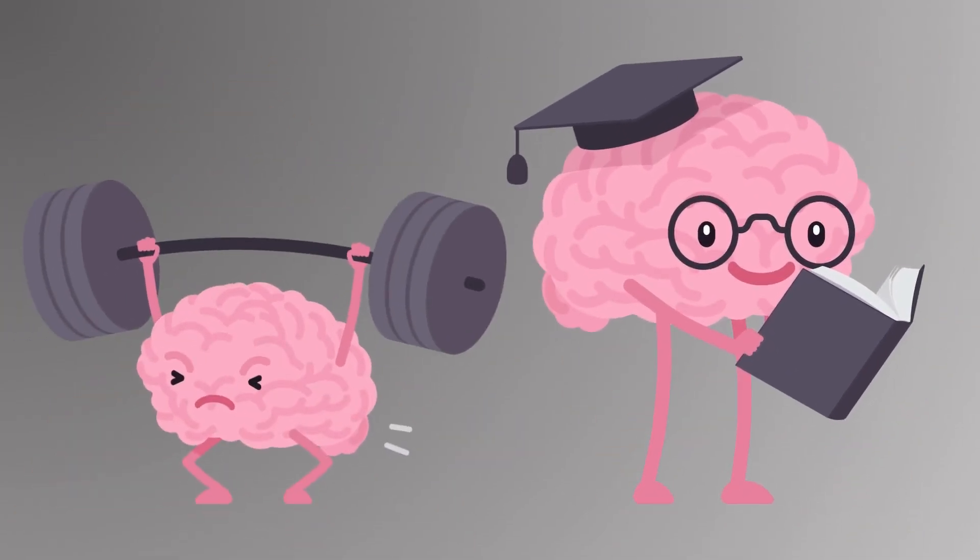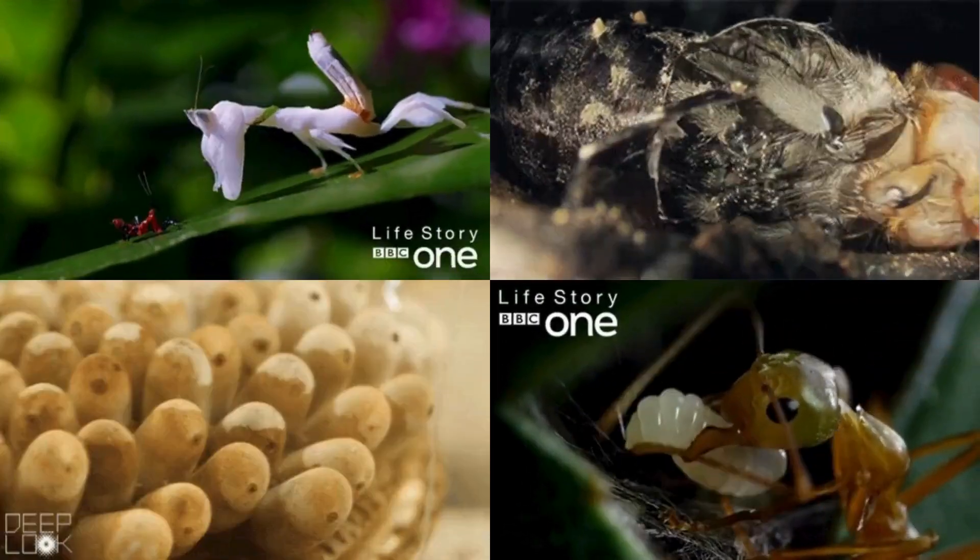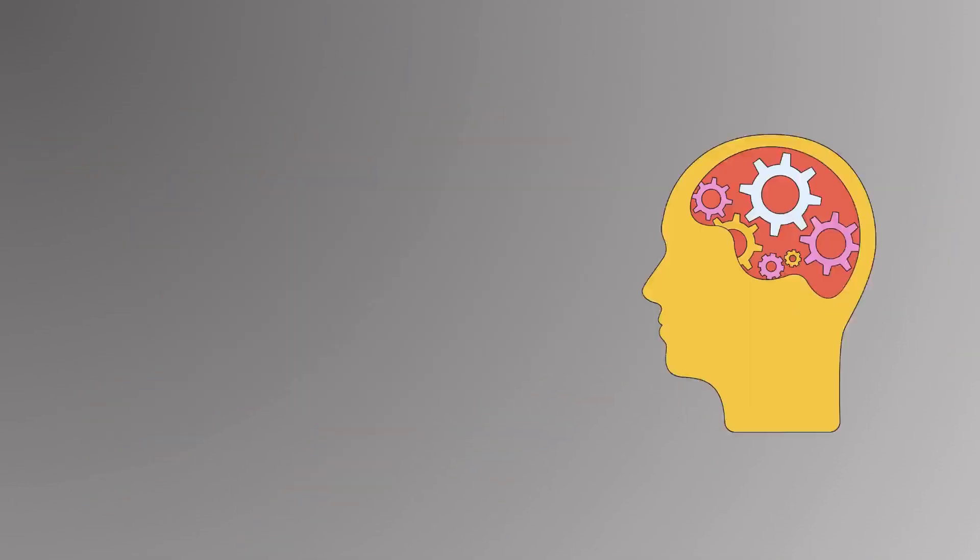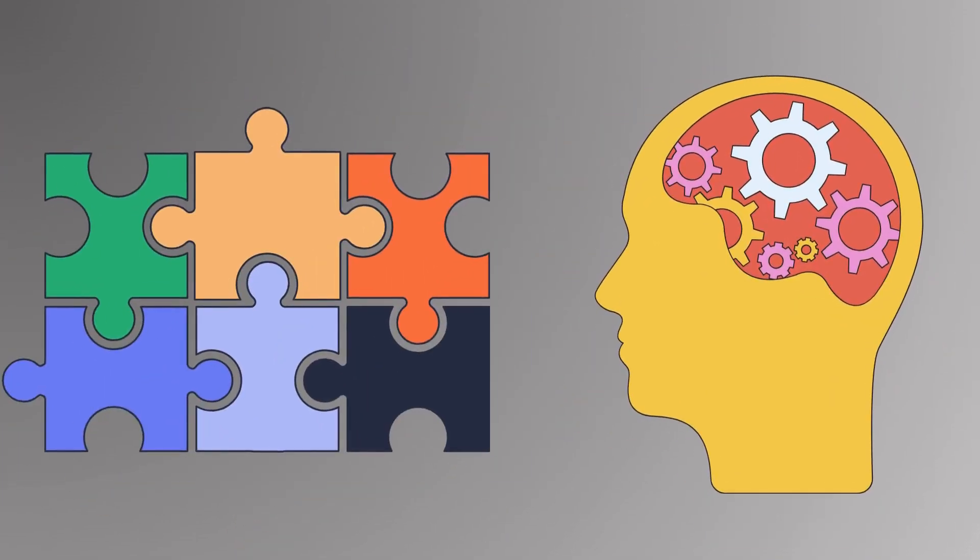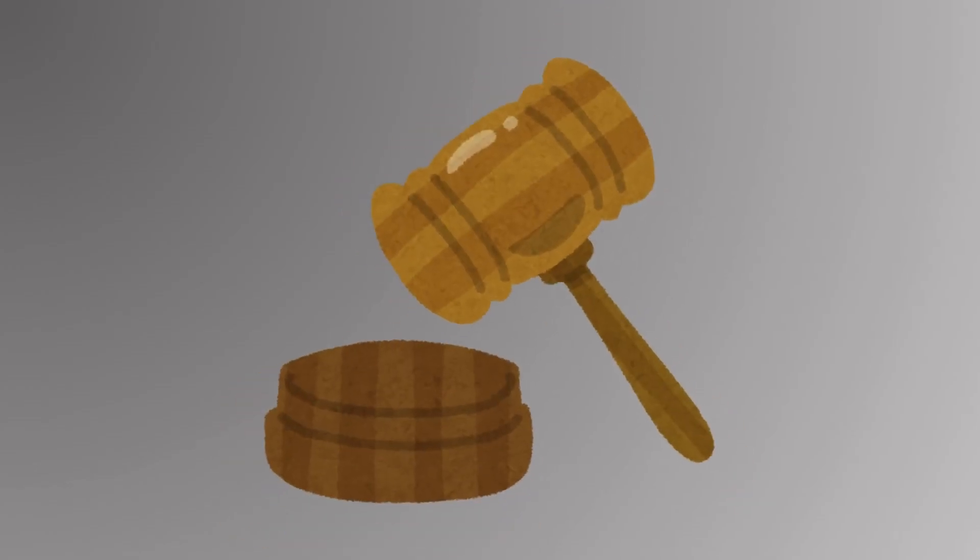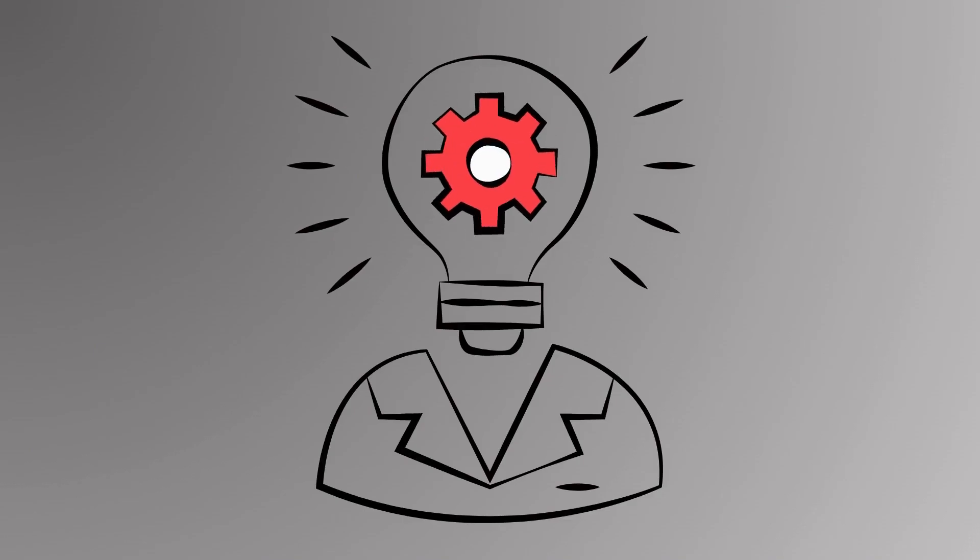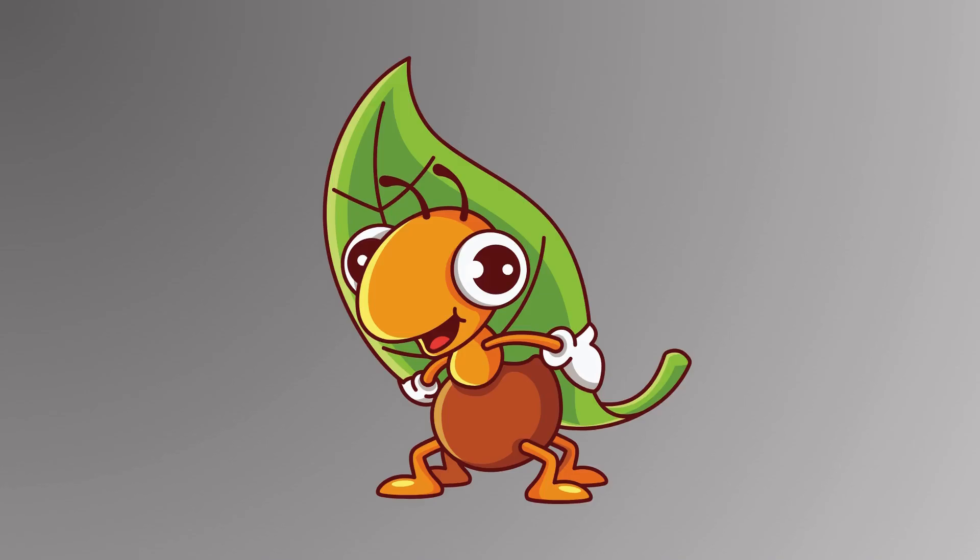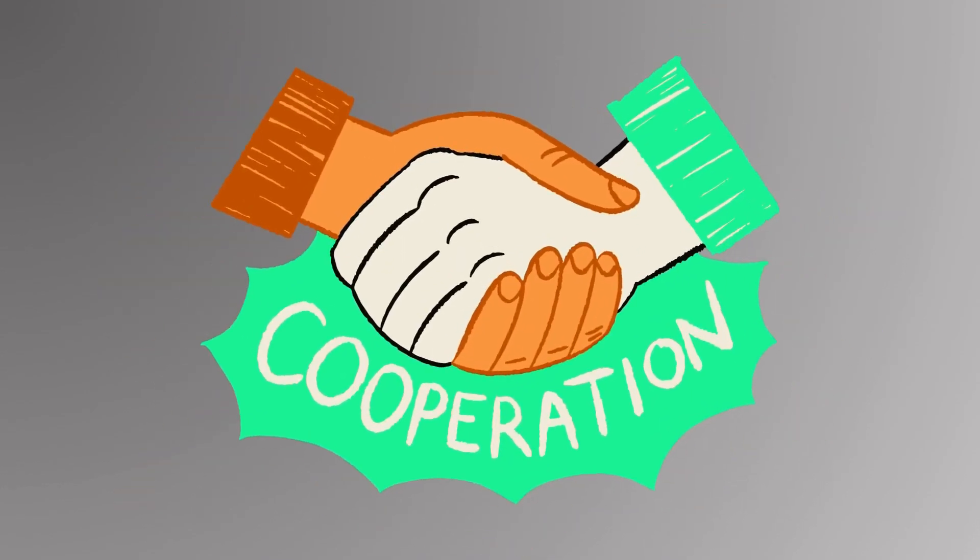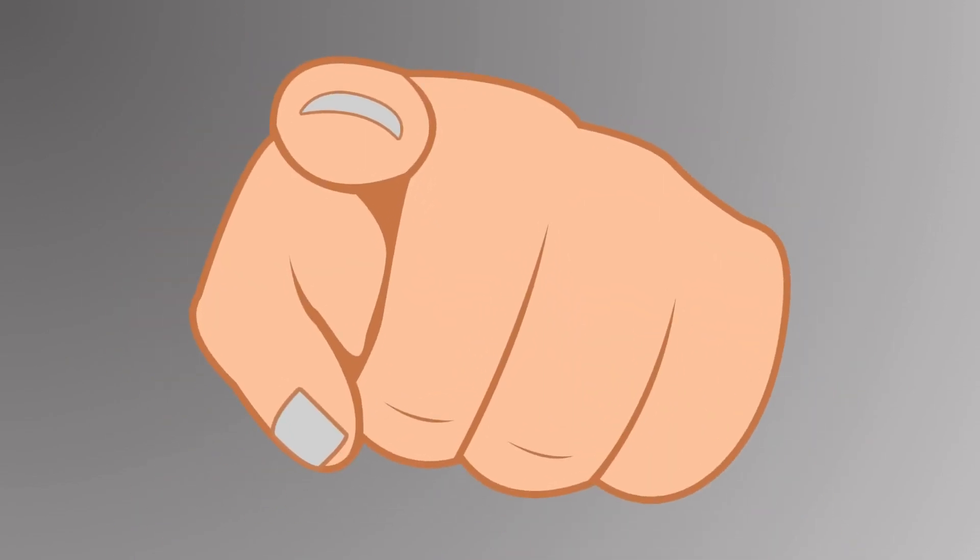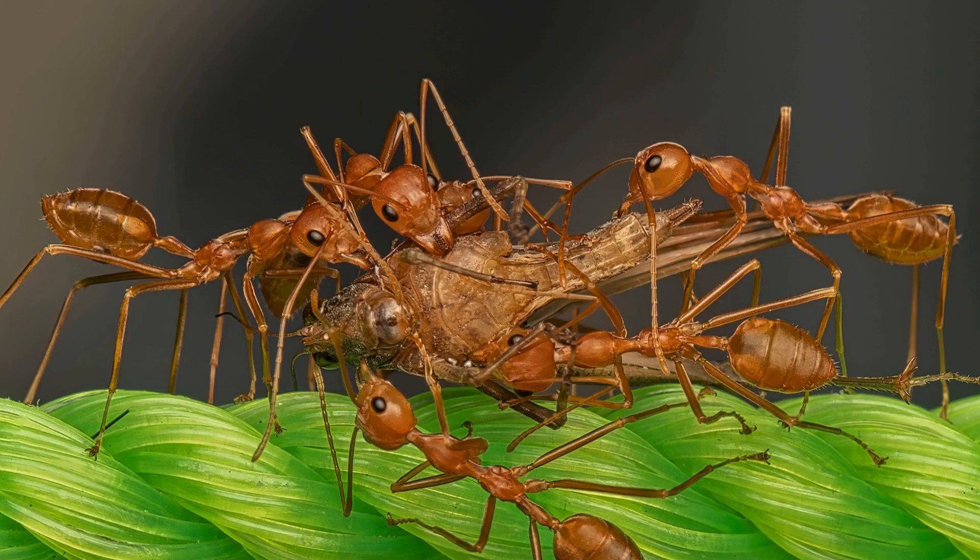Bugs display certain forms of social intelligence, especially in species that live in complex colonies like ants, bees, or termites. While they lack the complex cognition of humans, their behavior can sometimes mimic judgment-like decisions because of their reliance on evolved instincts, chemical signaling, and programmed responses. Social intelligence in bugs: Social insects like ants, bees, and termites exhibit cooperative behavior that suggests a form of collective decision-making or judgment.